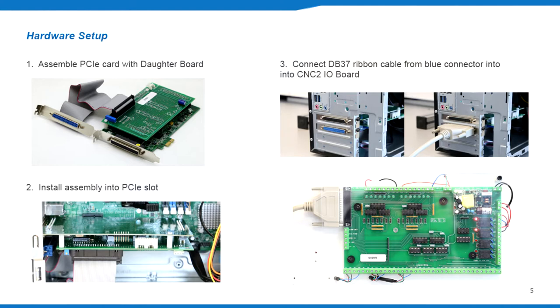Then connect the DB37 cable from the blue connector on the data board into the CN2IO board.